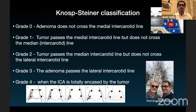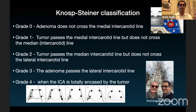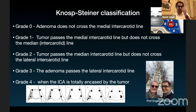Coming to tumor classification, most people follow the NOSP-Steiner classification. Looking at the carotid artery on either side of the pituitary with three lines — medial, median, and lateral — Grade 0 means no invasion. Grade 1 crosses the medial but not the median line. Grade 2 crosses the median but not the lateral. Grade 3 crosses the lateral carotid line. Grade 4 involves encasement of the carotid artery.